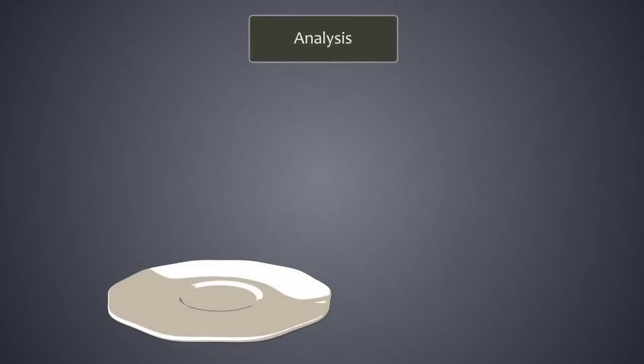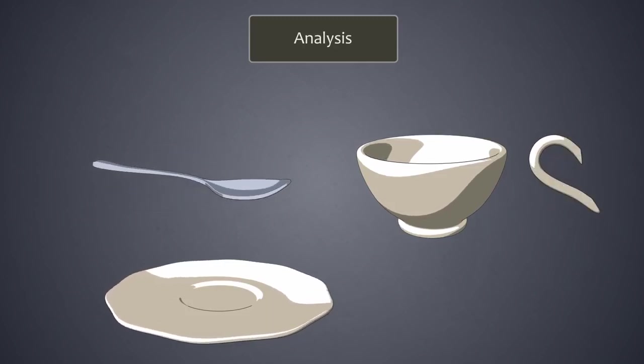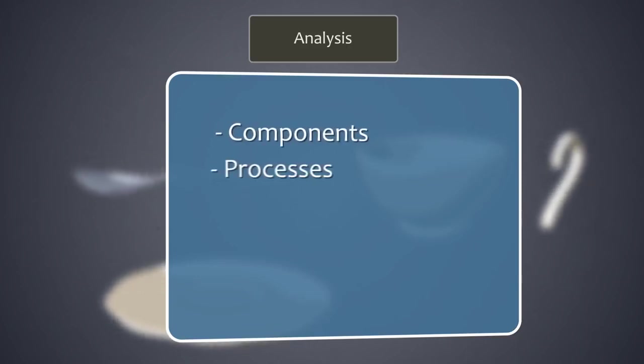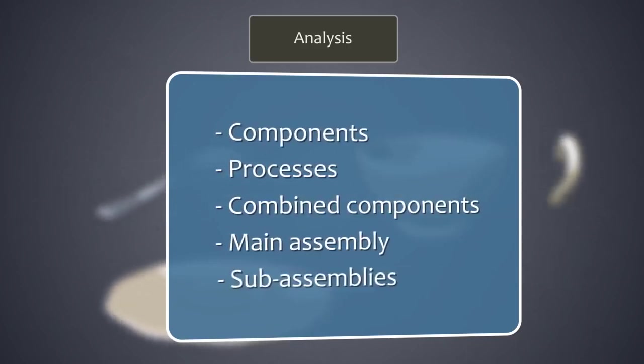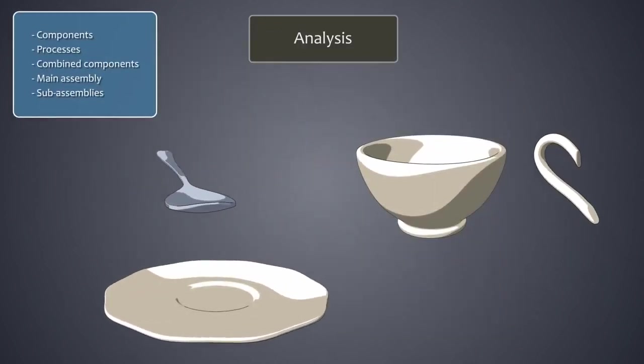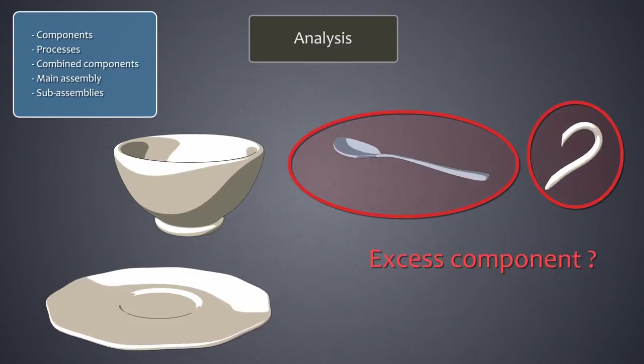During analysis, we assemble the product piece by piece on paper to build an assembly diagram. An assembly diagram consists of five different types of objects: components, processes, combined components, the main assembly, and sub-assemblies. The goal of analysis is to uncover at this early stage any excess components or processes which may exist.